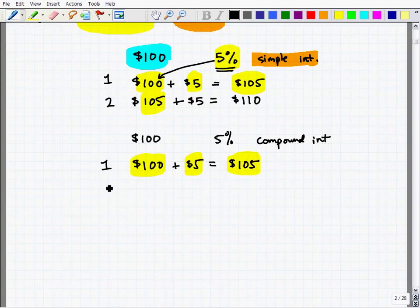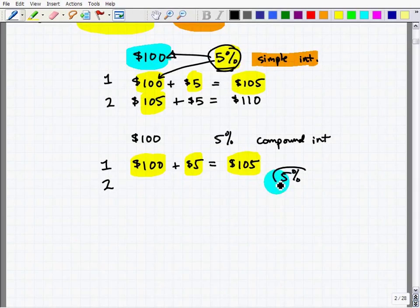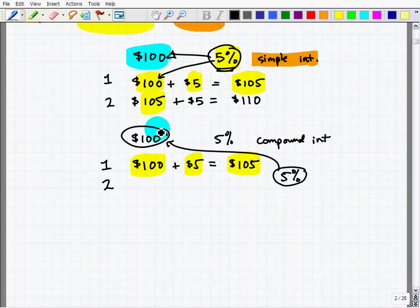However, the difference starts in year two. In year two, with simple interest, that 5% is going to apply always on the principal amount. Well, compound interest says, look, for year two, we're going to give you 5%, not of your original principal, rather, we're going to give it to you on what you earned after your first year. So now we're going to give you 5% of $105.